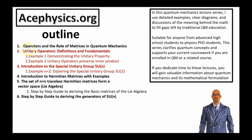Here's an outline of the talk. There will be an introduction to unitary operators with examples demonstrating the unitary properties. Then an introduction to the special unitary group, followed by a discussion of Hermitian matrices and showing that the set of n-by-n traceless Hermitian matrices forms a vector space called the Lie Algebra. There will also be step-by-step guides to deriving the basis matrices of the Lie Algebra and the generators of the group SUN.